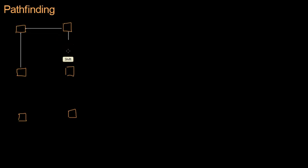Why does it say 'shift' next to my mouse cursor? I don't know. Why does the software think it's important to tell me that I'm pressing shift when I already know that I'm pressing shift? Because I'm pressing shift. I don't know that either.